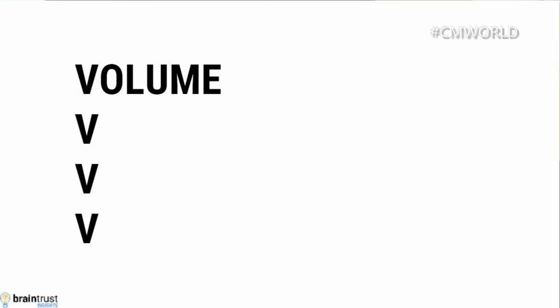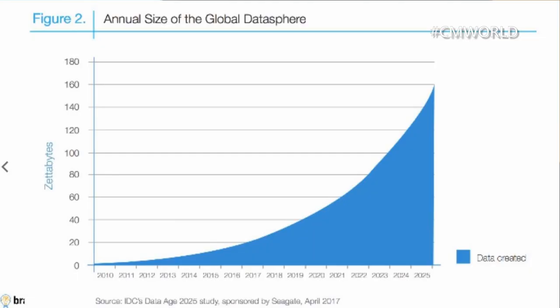The first is a volume problem. How much content are we creating? Just to give you a sense of how much data and content there is — in 2018, we are creating about 30 zettabytes of data as a civilization. Everything from laptops to tweeting to the sensors in your home — all that is 30 zettabytes of data.